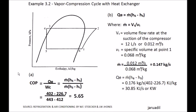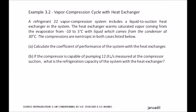Now we can solve for COP. COP equals QE over WC, which is mass flow rate times (H6 minus H5) divided by mass flow rate times (H2 minus H1). Substituting the values, the mass flow rates cancel, giving COP equals 5.65. For part B, if the compressor pumps 12 liters per second at compressor suction, what is the refrigerating capacity with the heat exchanger?